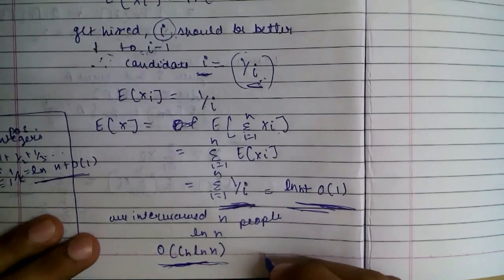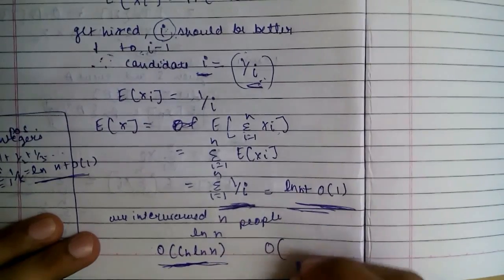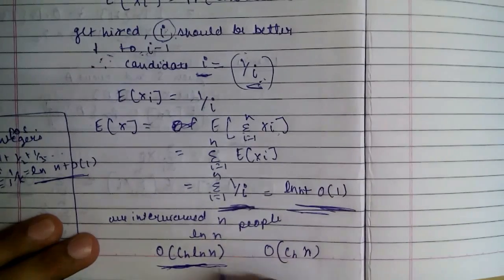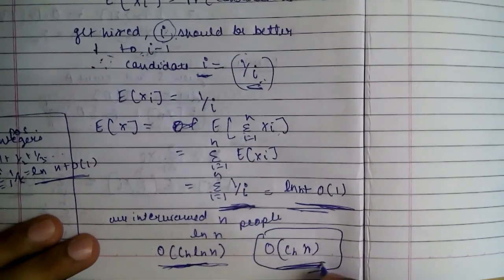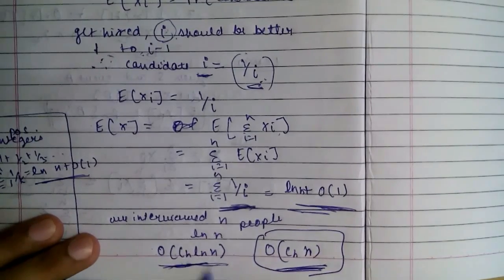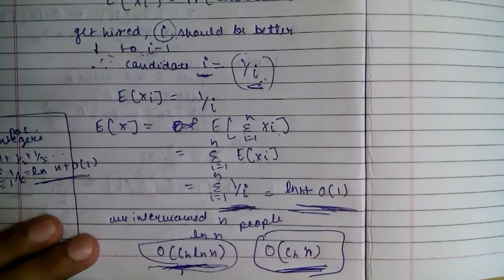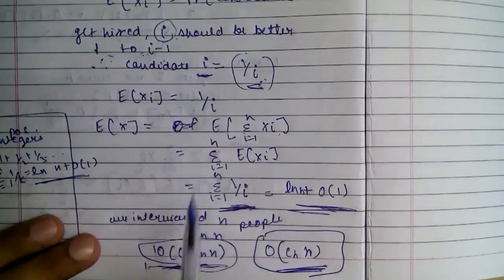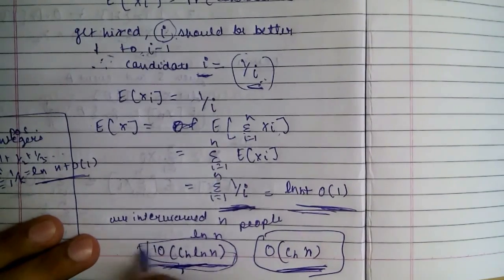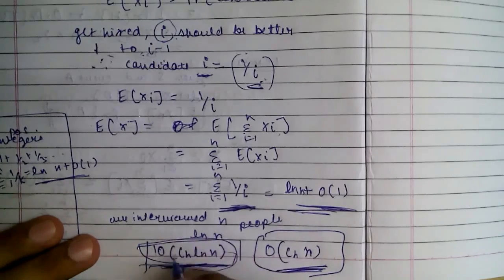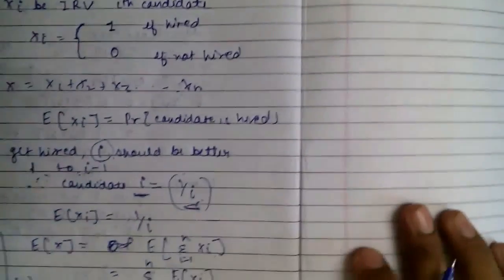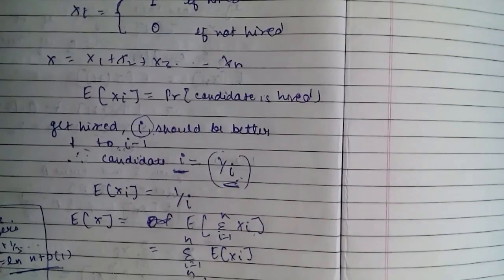This was the worst case before, but by the help of those randomized algorithms we got control over the order of the candidates. Then using the concept of indicator variables, we minimized our time to C_H of n log n. This was the hiring cost.